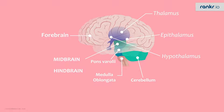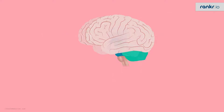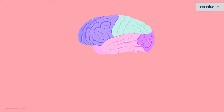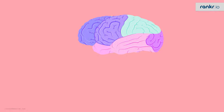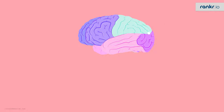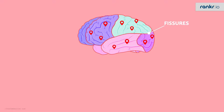In the previous video, we took a look at the overall structure of the brain. At the end, we also saw that the cerebrum is divided into different lobes. Each hemisphere is divided into different lobes which are separated by smaller fissures, and each lobe has specific areas dedicated to a particular function.